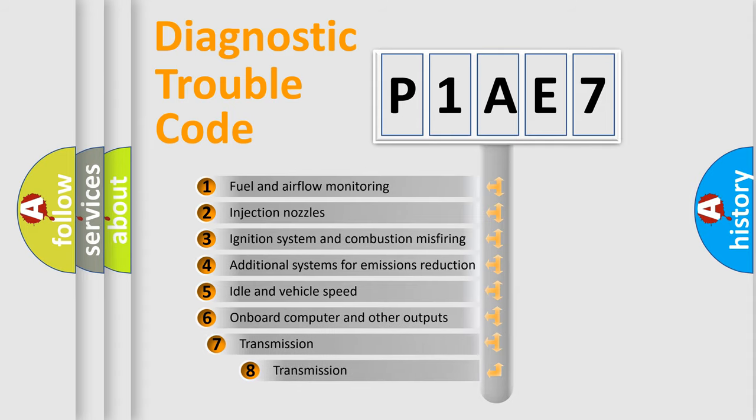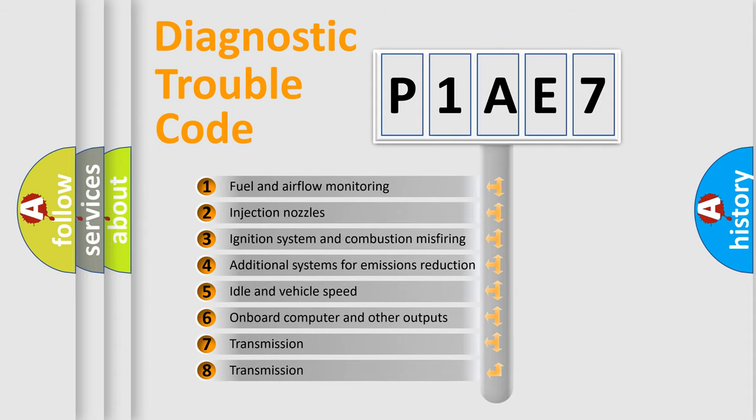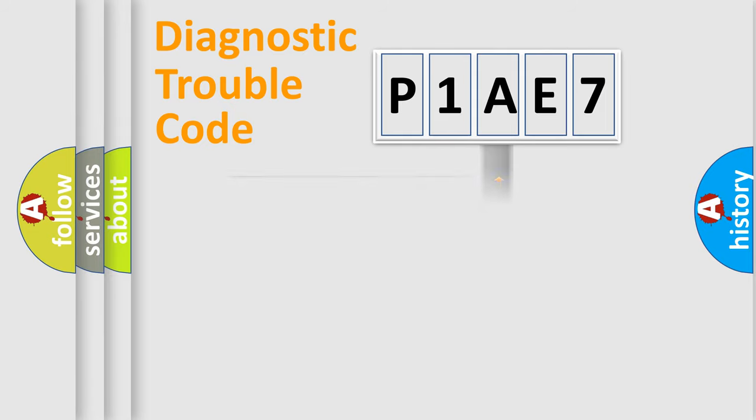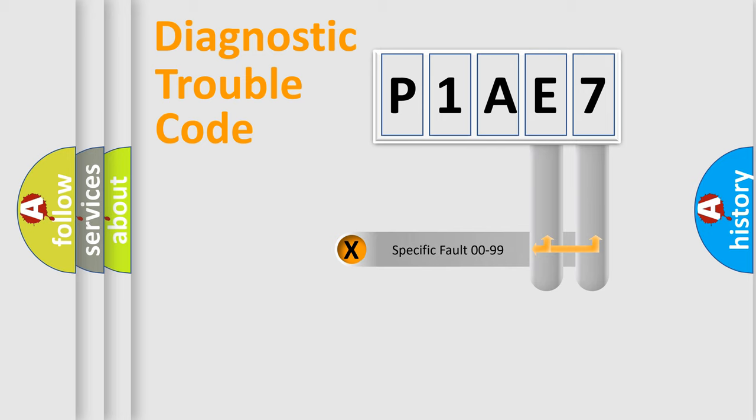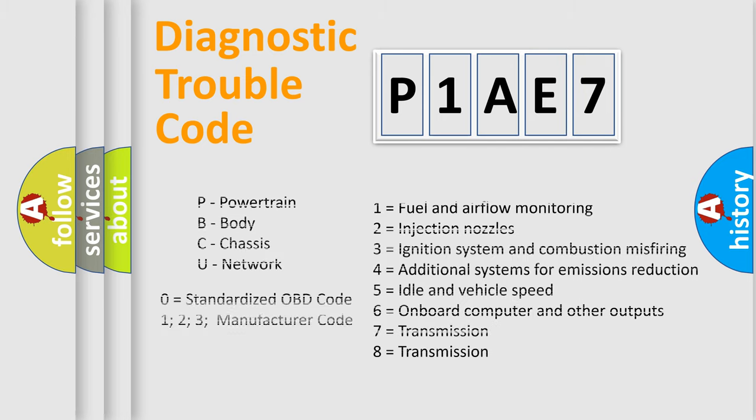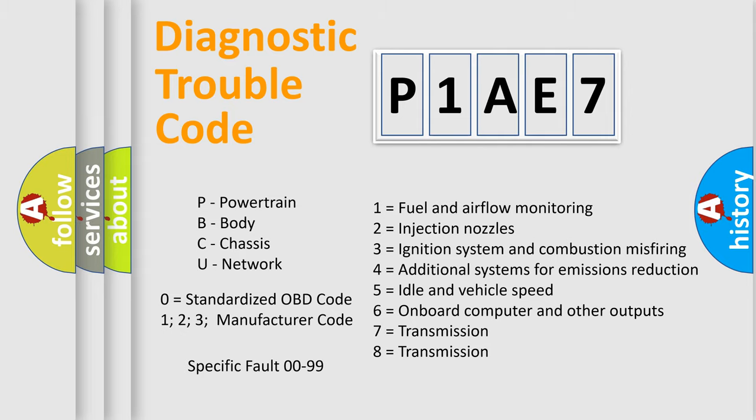The third character specifies a subset of errors. The distribution shown is valid only for the standardized DTC code. Only the last two characters define the specific fault of the group. Let's not forget that such a division is valid only if the other character code is expressed by the number zero.